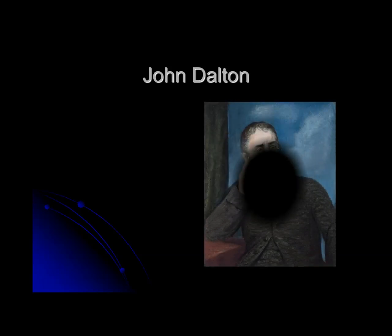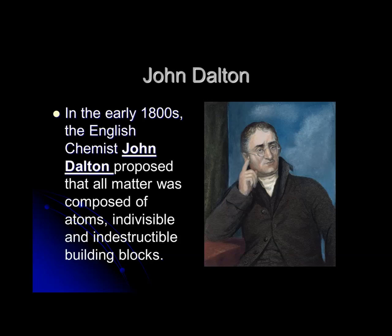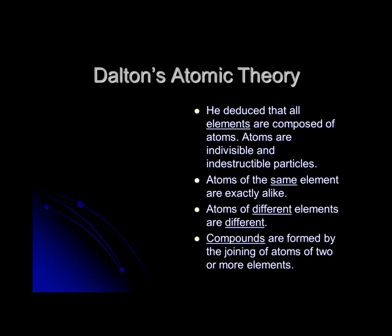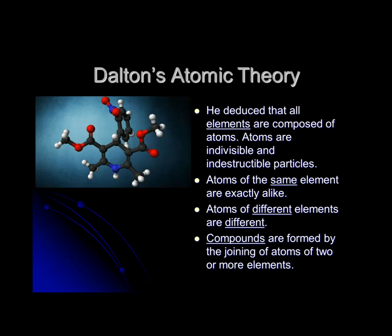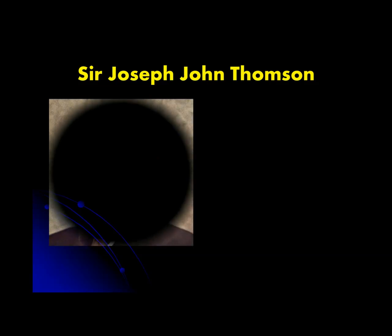Then came John Dalton. In the 1800s, the English chemist John Dalton proposed that all matter was composed of atoms, which are indivisible and indestructible building blocks. According to his theory, all elements are composed of atoms; atoms of the same element are exactly alike; atoms of different elements are different; and compounds are formed by the joining of atoms of two or more elements. His atomic model was known as the billiard ball model.